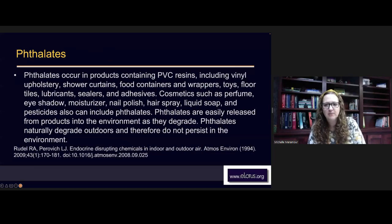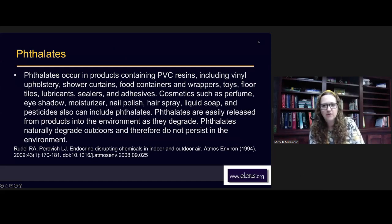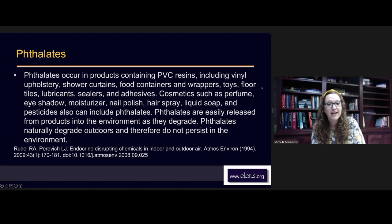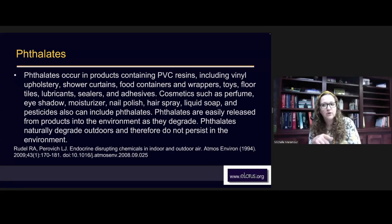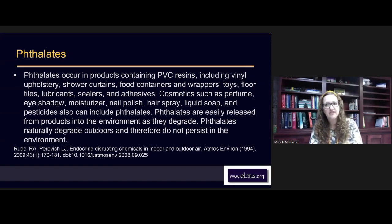Phthalates occur in products containing PVC resin, including vinyl upholstery, shower curtains, food containers and wrappers, toys, floor tiles, lubricants, sealers, and adhesives. Cosmetics such as perfume, eyeshadow, moisturizer, nail polish, hair spray, and liquid soap can also include phthalates. Pesticides can also contain phthalates. Phthalates are easily released from products into the environment as they degrade. You'll want all your clients to look at whatever cosmetics they're using and run it through EWG.org to find out if there are phthalates in their products.